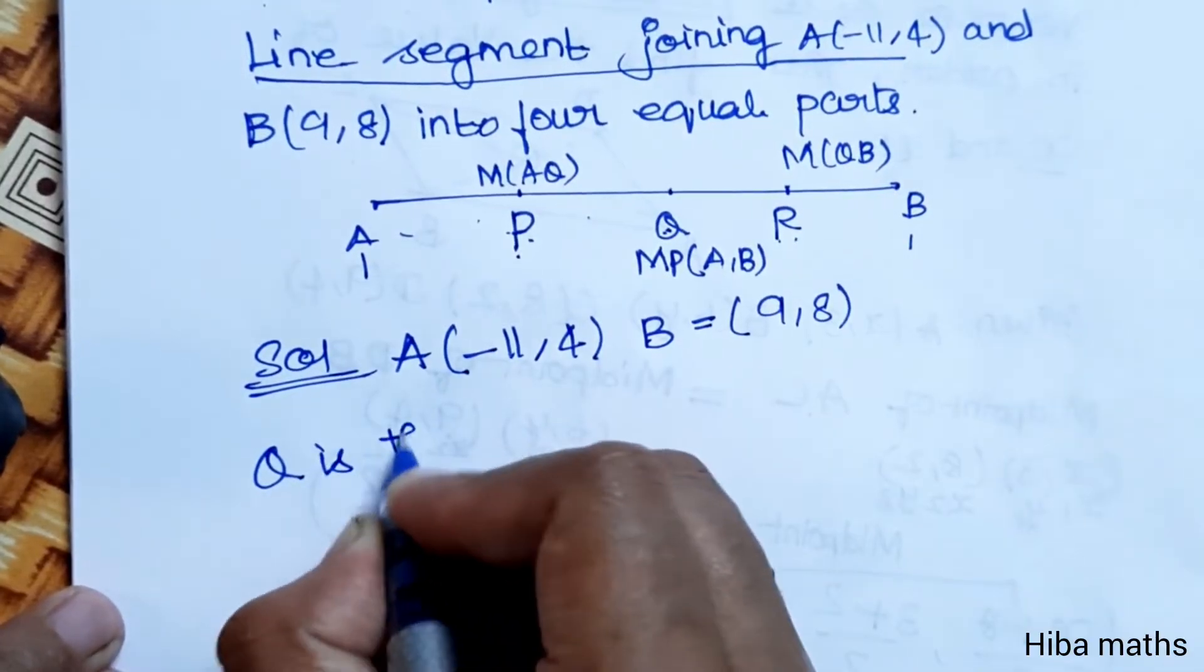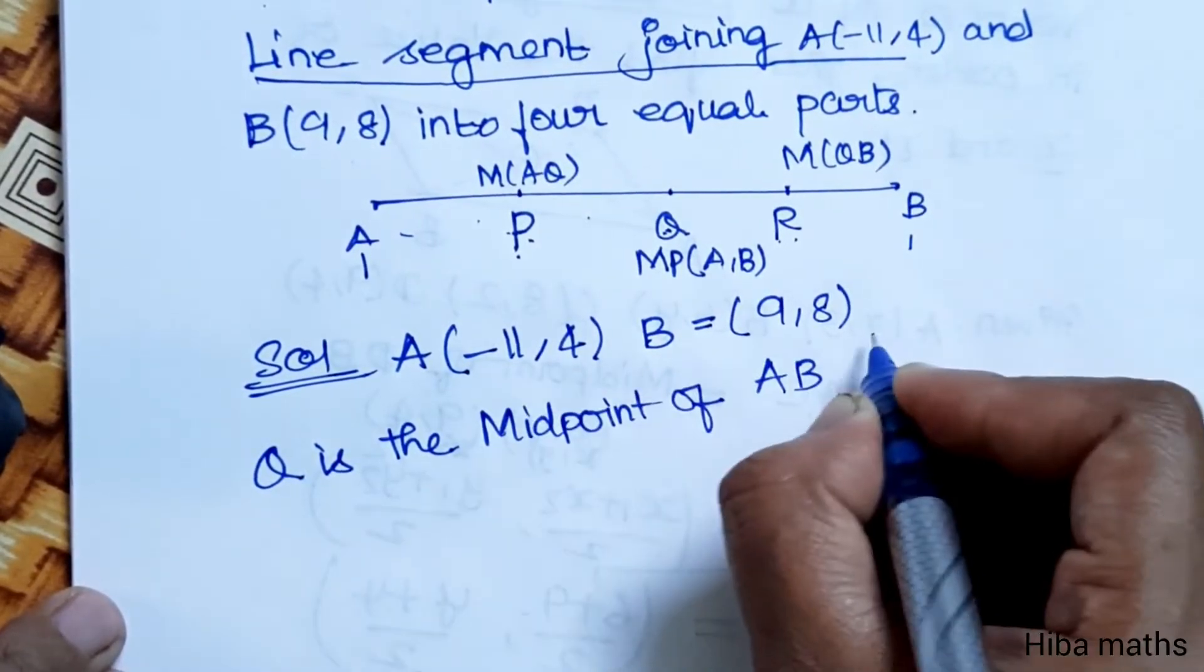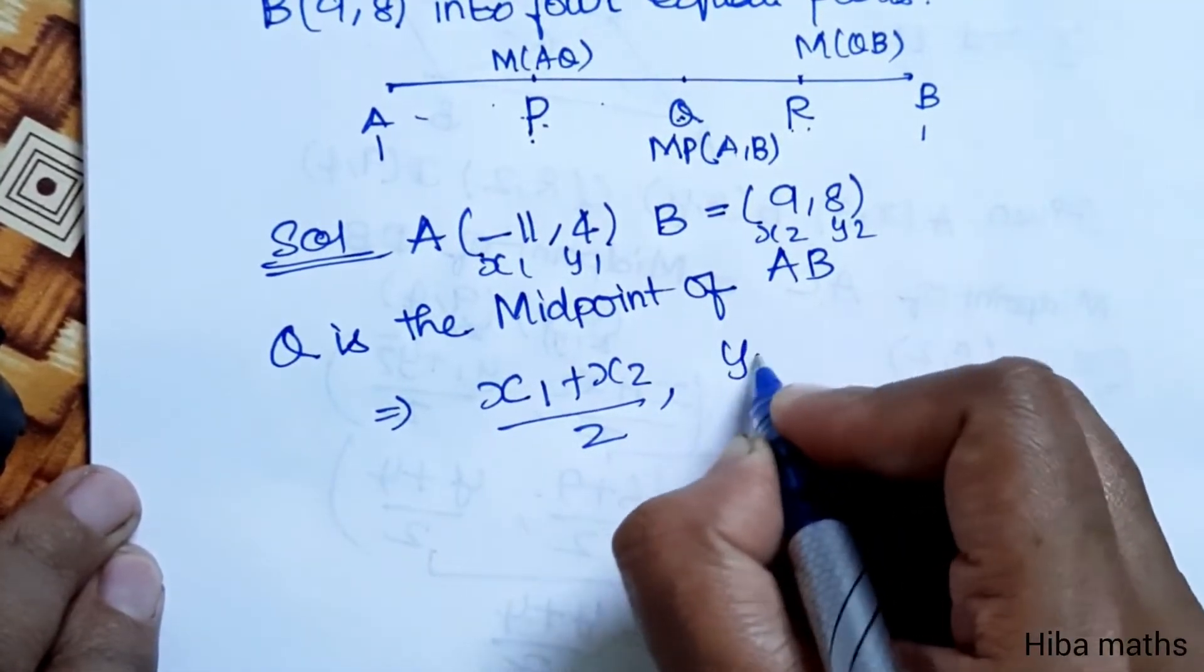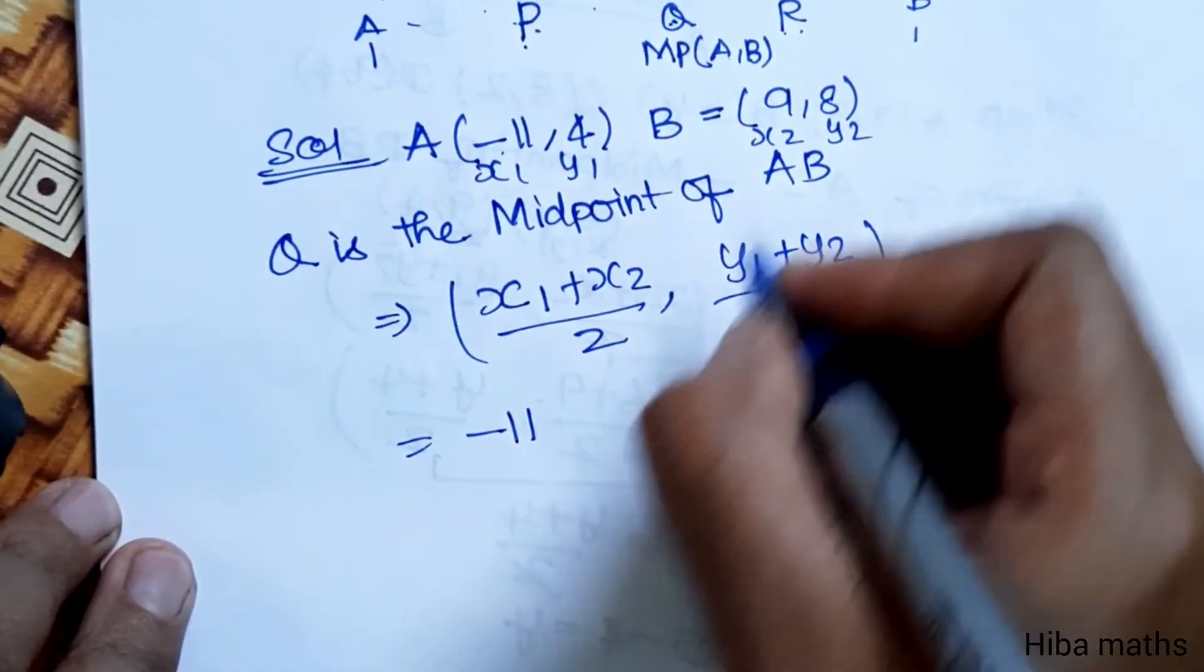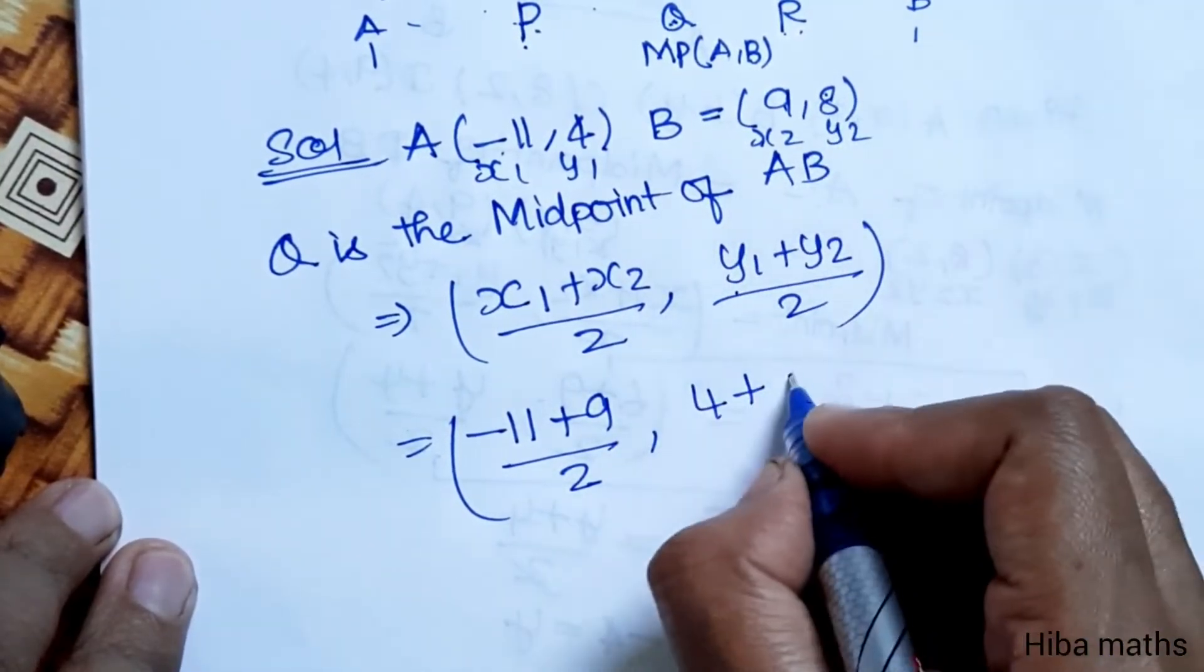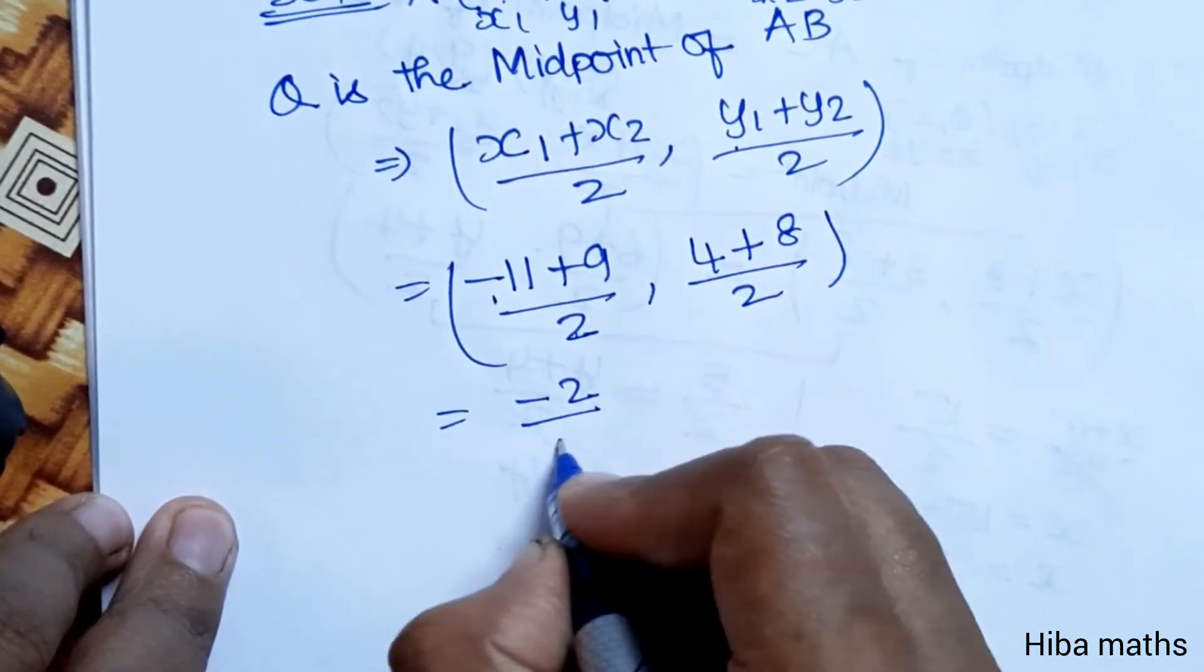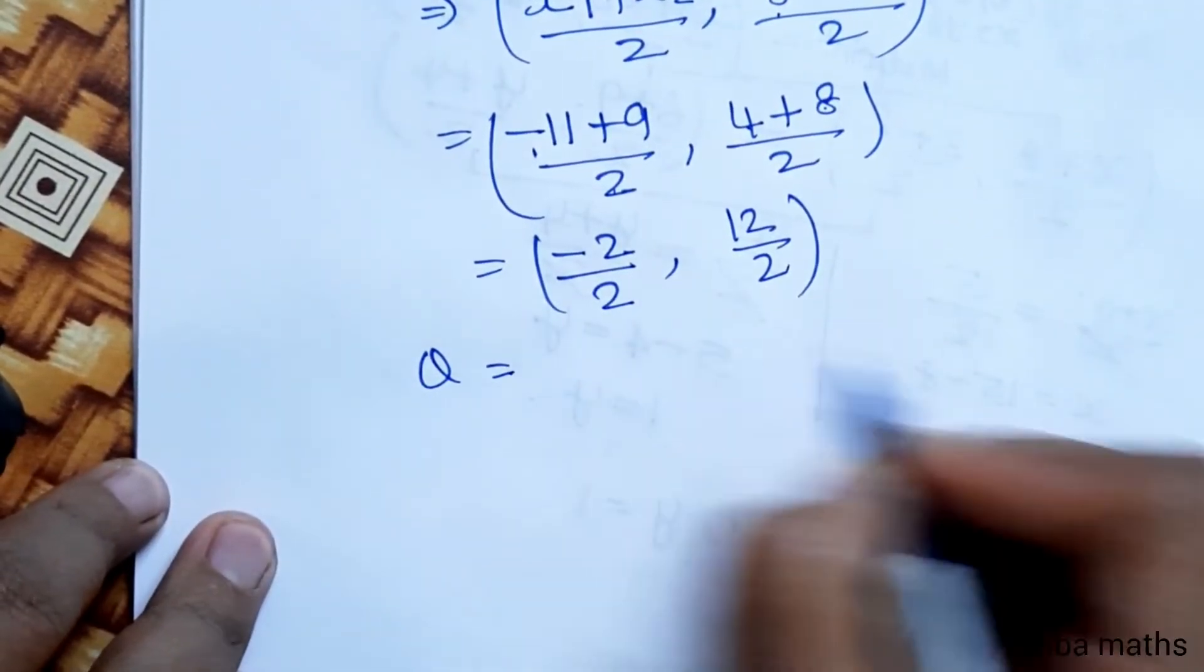Q is the midpoint of AB. A and B points are here: x₁, y₁, x₂, y₂. Midpoint formula is (x₁ + x₂)/2, (y₁ + y₂)/2. x₁ value is -11, x₂ value is +9 by 2. y₁ value is 4 plus y₂ value is 8 by 2. -11 + 9 = -2 divided by 2. 4 + 8 = 12, 12 by 2. So Q point is (-1, 6).